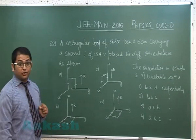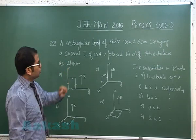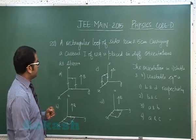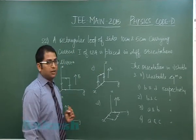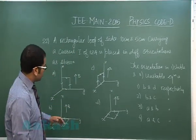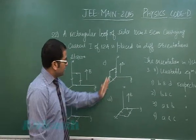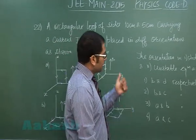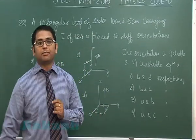Again, a next question from magnetism. It says a rectangular loop of side 10 and 5 centimeter carrying current I of 12 ampere is placed in different orientations as shown. So this is the loop and the external field respectively given. We need to see the orientation in stable and unstable equilibrium.